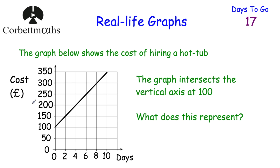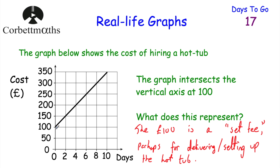The next question: the graph shows the cost of hiring a hot tub. For two days it costs £150, for ten days it costs £350, and so on. We're told the graph intersects the vertical axis at 100. What does that represent? This is for zero days - before you've even received the hot tub - so this must be a set fee. It's £100 to begin with, and then there's a charge per day for renting the hot tub. So £100 is a set fee, perhaps for delivering or setting up the hot tub.